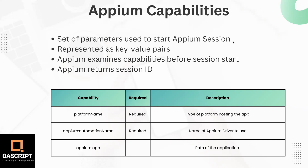For example, this could be a certain mobile operating system, a certain version of a device, or a specific application. There could be lots of different things which you require in your automation session - all of these are defined in your capabilities section. When we start an Appium session, our Appium client will include this set of capabilities in a JSON format, represented as key-value pairs with values allowed to be any valid JSON type including other objects.